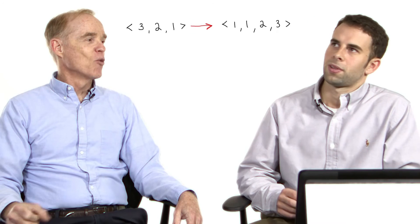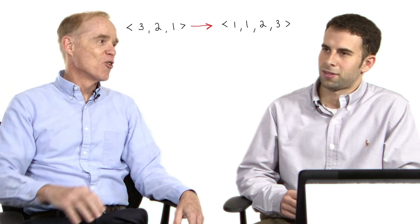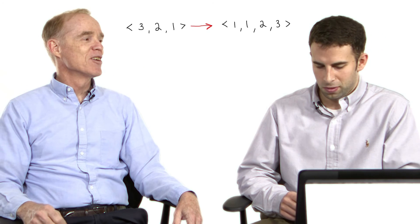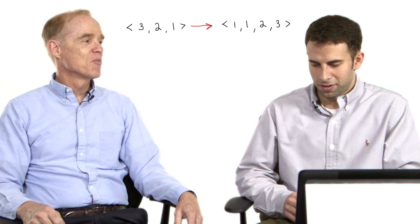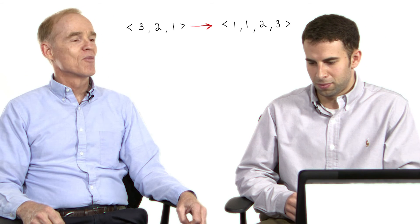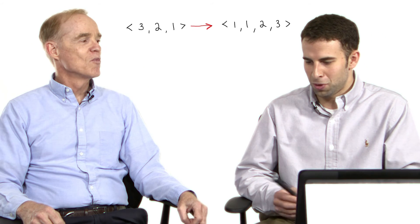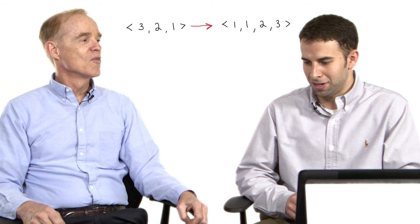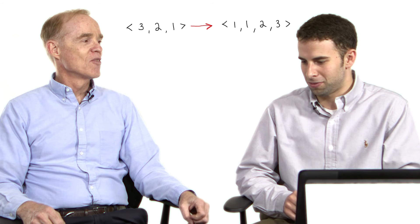Okay. So we're going to take 3, 2, 1 and map it to 1, 2, 3, 4. So it satisfies your specification. Right. We can't have any new elements appear either in the output vector y.